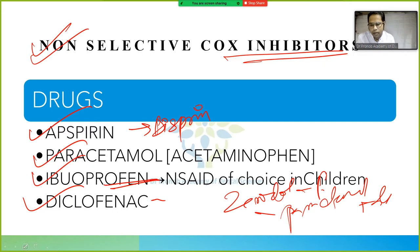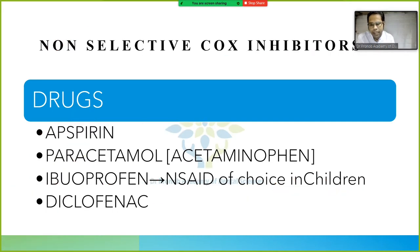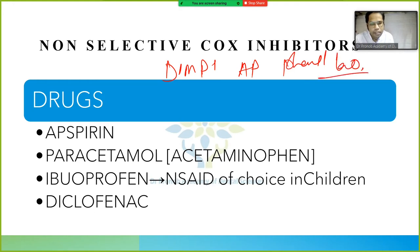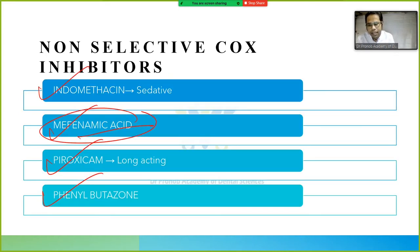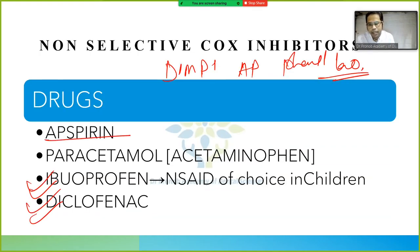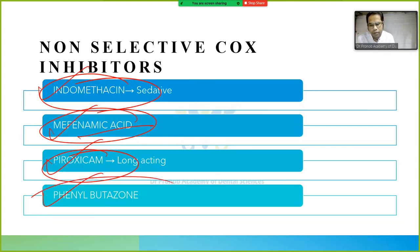The mnemonic is DIMPY — imagine a person named Dimpy asking for phenyl to clean the home on a Sunday. D for diclofenac, I for ibuprofen, M for mefenamic acid, P for piroxicam, then indomethacin, A for aspirin, and P for paracetamol — and phenyl stands for phenylbutazone.